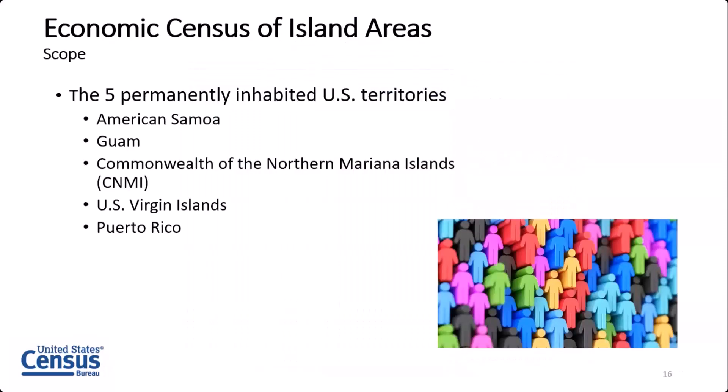Now I'd like to talk more specifically about the Economic Census of Island Areas. This covers the five permanently inhabited U.S. territories: American Samoa, Guam, the Northern Mariana Islands, the U.S. Virgin Islands, and the largest, of course, Puerto Rico. The U.S. has other territories, but only these five have permanent populations, so only these five are included in the Economic Census.